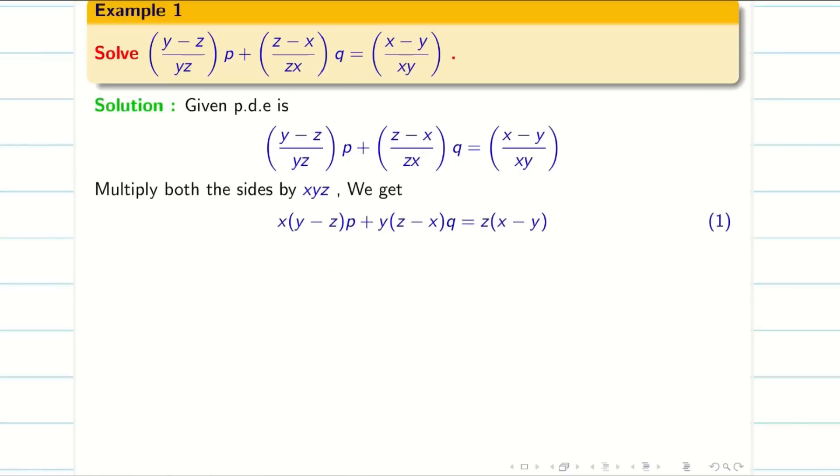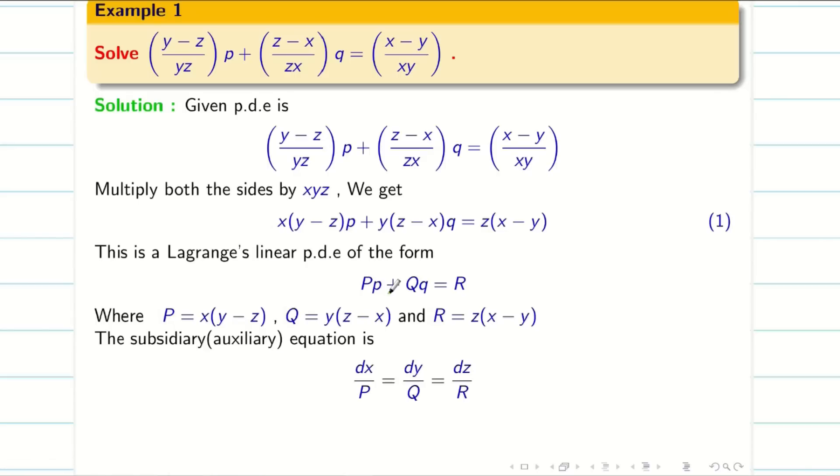Now it is of the Lagrangian form with capital P, small p, capital Q, small q, capital R. We identify capital P, Q, R. The auxiliary equation is dx/P = dy/Q = dz/R. Therefore, I write my auxiliary equation.